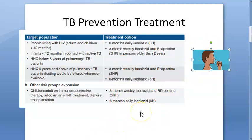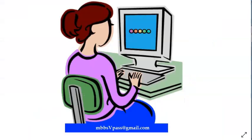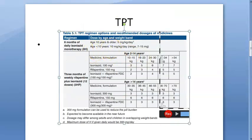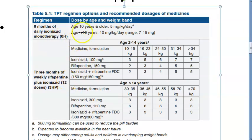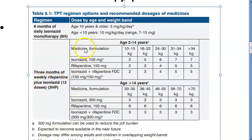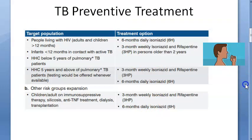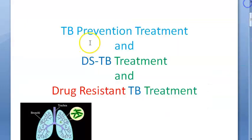The two drugs for prevention of tuberculosis are isoniazid and rifapentine. There is isoniazid monotherapy and isoniazid plus rifapentine as regimen options. This is called the TPT regimen — Tuberculosis Preventive Treatment. So we are done with the preventive treatment part: isoniazid and rifapentine.